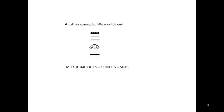For another example, this is a three place number. The top place, which is the third place, is 14. The second place, turtle shell, is a zero, and the first place is a five. So this would be 14 times 360 which is 5040 plus five for a total of 5045.